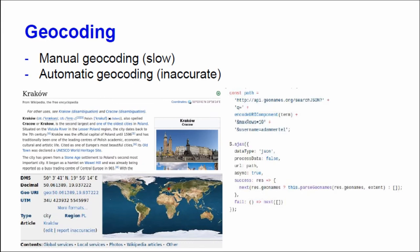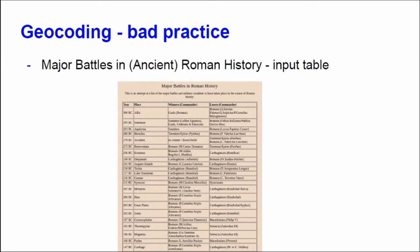Manual geocoding is quite slow, but the advantage is that it's accurate and validated by the author. The second possibility is to use an automatic geocoding script that accesses a database, looks for the place name, and takes the first result. This is problematic for historical places, because they may no longer exist or a place name may exist in multiple locations around the world.